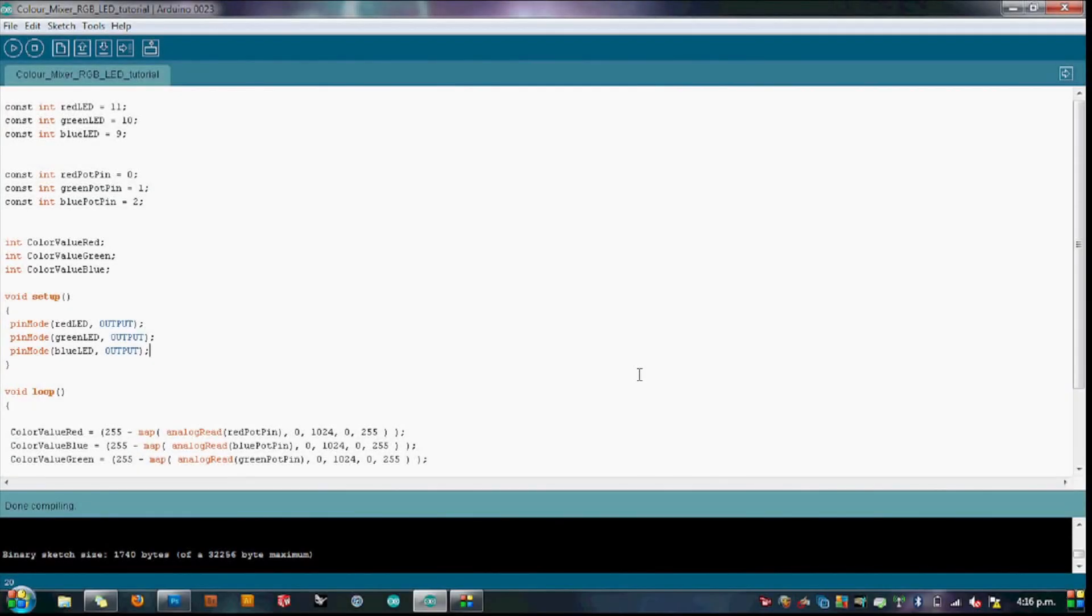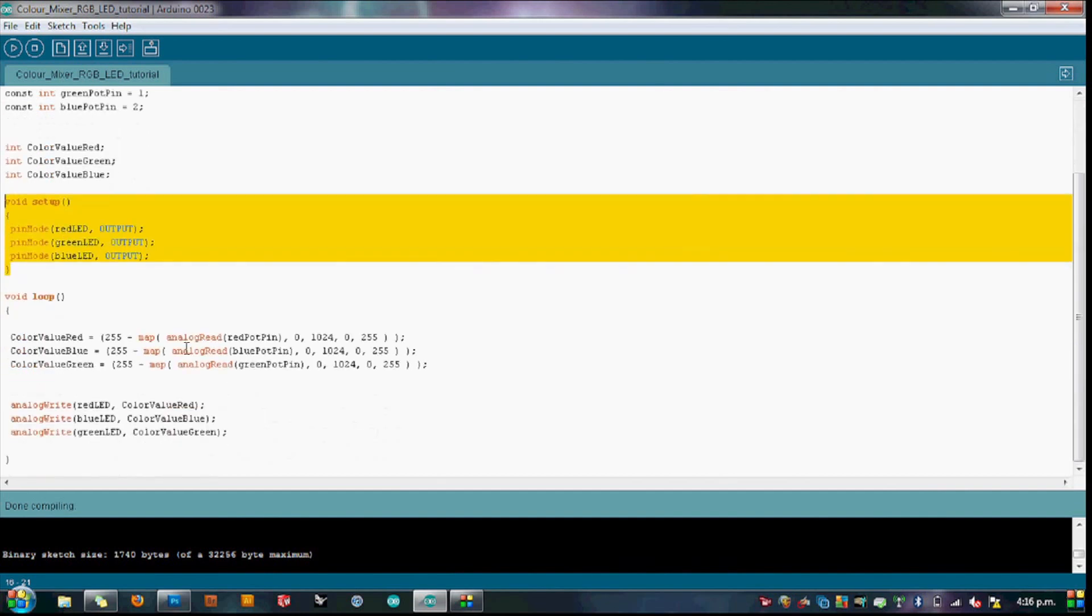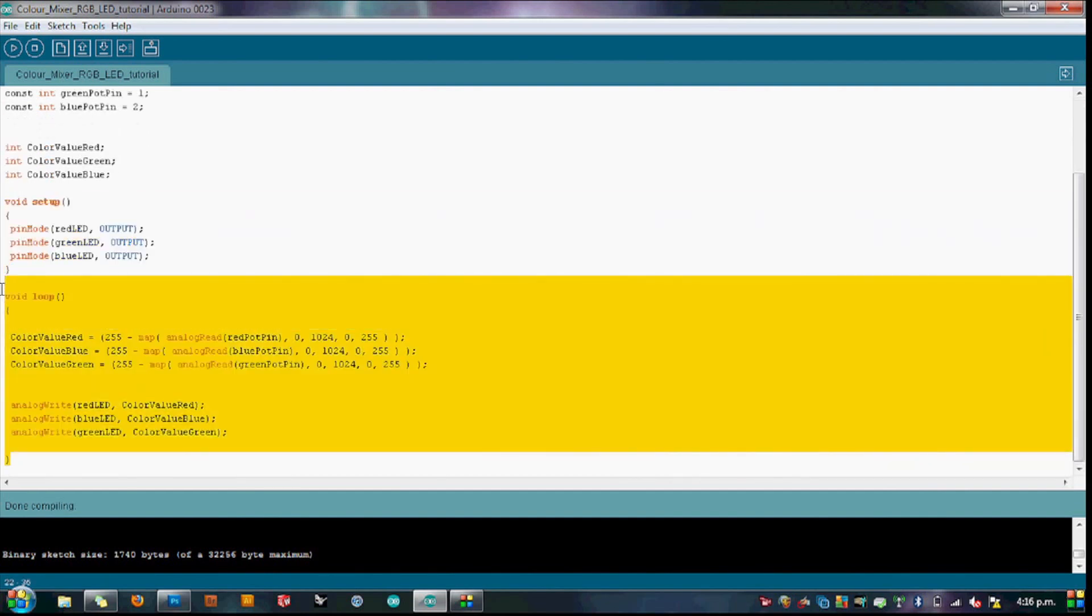There are three main sections within the sketch environment. First up we state any variables. Next is the void setup section, which is only called once to set up and initialize pin modes. The main section is the void loop. This is where the Arduino takes its instructions from running in a continuous loop.